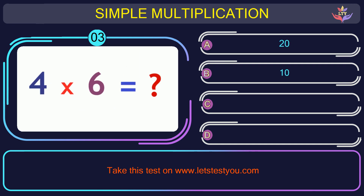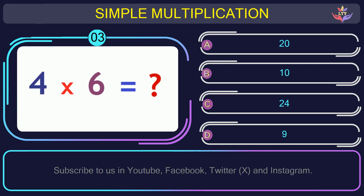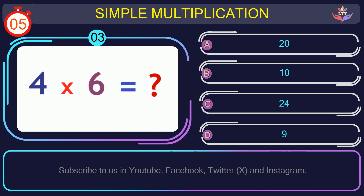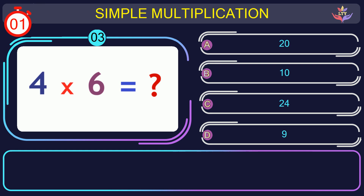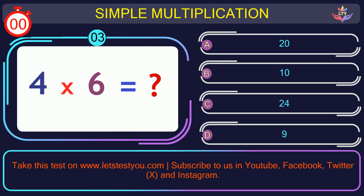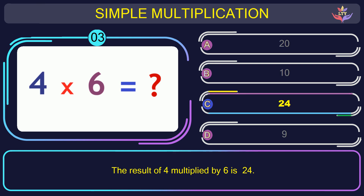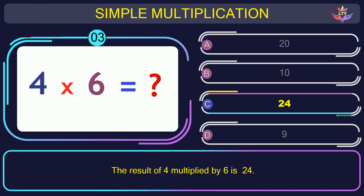Question number 3: if you multiply 4 by 6, what is the result? The correct answer is option C.